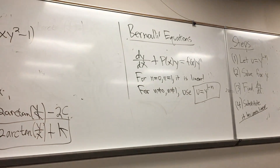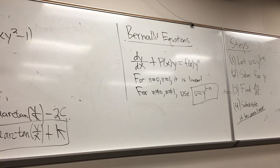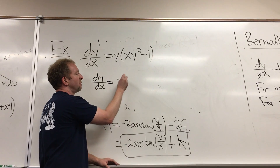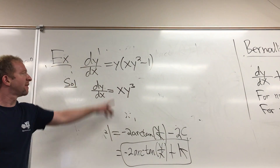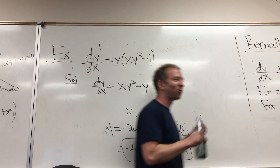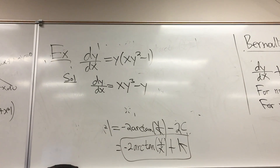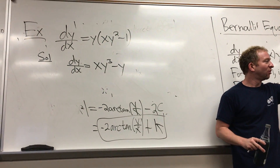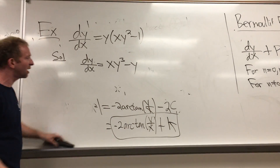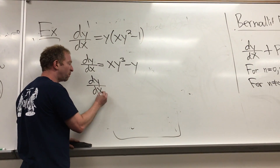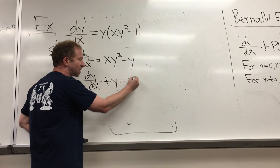What's the first step? What's the first thing we should do with the y? Distribute. So dy/dx — this is going to be x times y cubed, and then just minus y. So: x·y³ minus y.